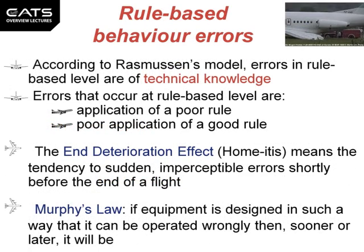Rule-based behaviour errors. According to Rasmussen's model, errors in rule-based level are of technical knowledge. Errors that occur at rule-based level include application of a poor rule, or poor application of a good rule. The end-deterioration effect, or 'home-itis', means the tendency to sudden, imperceptible errors shortly before the end of a flight.